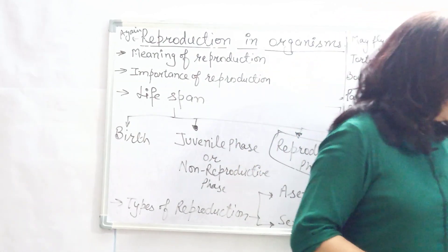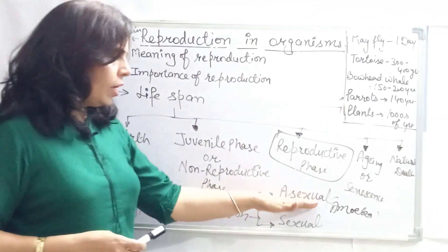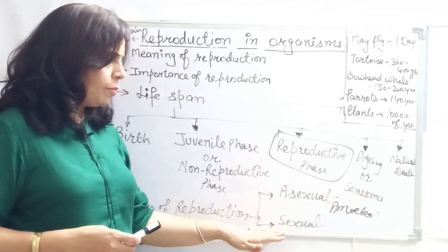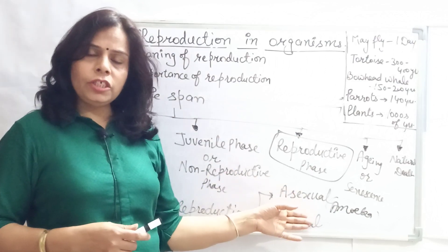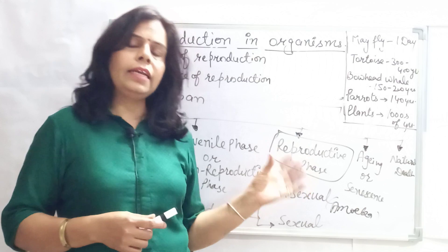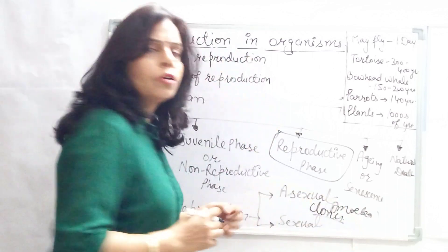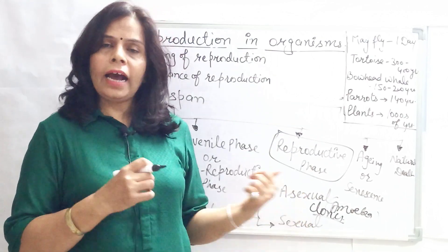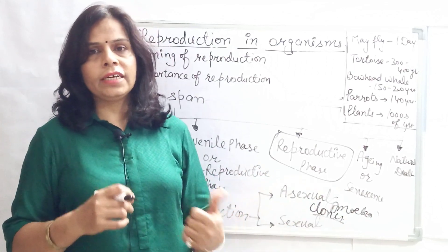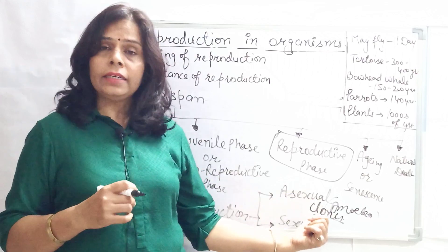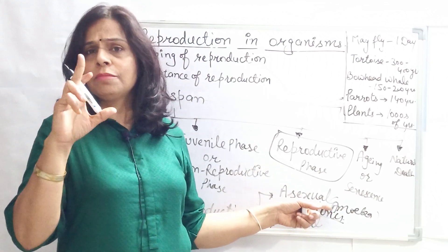In asexual reproduction, only one parent gives its genetic material, so the organisms produced are exactly identical to their parents — these are known as clones. Clones are organisms that are an exactly identical copy of their parent, morphologically and physiologically similar. Asexual reproduction takes place by only one type of division — mitosis.